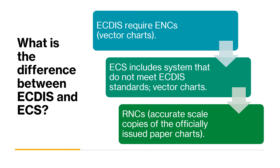An Electronic Chart System is a general term for all electronic equipment that can display a vessel's position on a chart on a screen. ECDIS requires a special type of electronic chart called ENCs — Electronic Navigation Charts — which are vector charts that have been officially approved by the national hydrographic office for those chart areas. We have the international hydrographic office internationally, but also national hydrographic offices that approve charts for particular geographic areas.